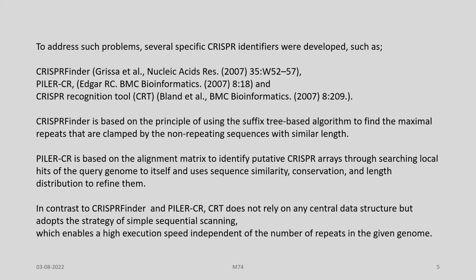Some of the CRISPR-specific tools are CRISPR-Finder by Grisai et al., Piler-CR by Edgar, and the CRISPR Recognition Tool (CRT) by Blunt. CRISPR-Finder is based on a suffix tree-based algorithm to find maximal repeats flanked by non-repeating sequences of similar length. Piler-CR is based on an alignment matrix to identify putative CRISPR arrays by searching local hits of the query genome to itself, and uses sequence similarity, conservation, and length distribution to refine them.